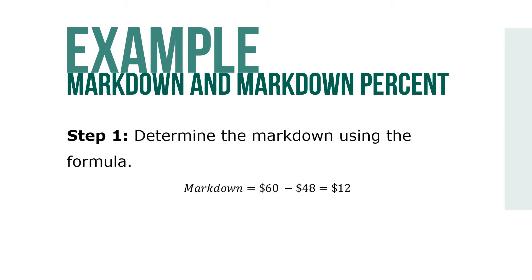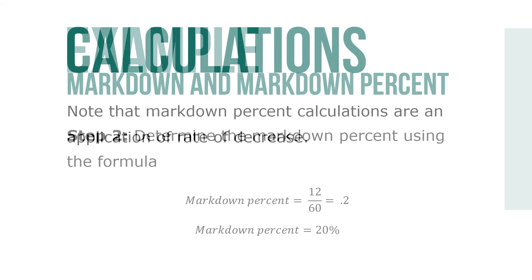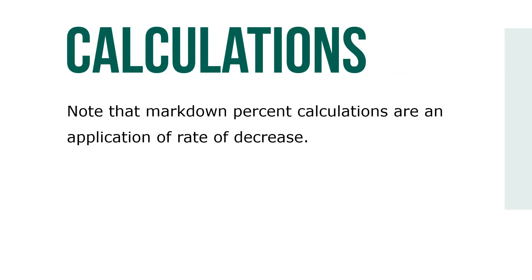Step 1: Determine the markdown using the formula. Markdown equals $60 minus $48, for a total of $12 in markdown. Step 2: Determine the markdown percent by using the formula. Markdown percent equals $12 over $60, or 0.2, giving us a 20% markdown. Note that markdown percent calculations are an application of a rate of decrease. In the percentage formula, the markdown portion represents the amount of decrease and the original selling price as the base represents the original amount.